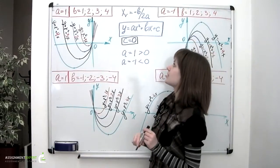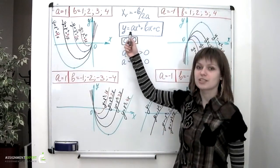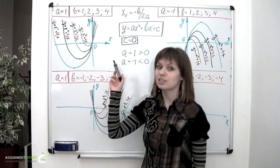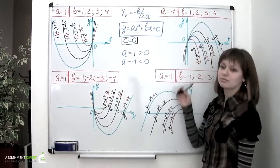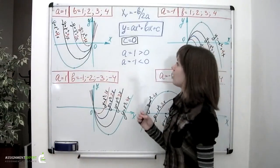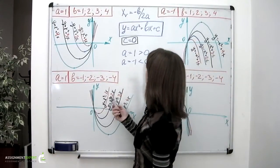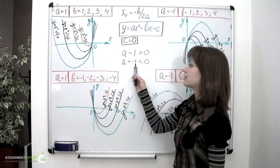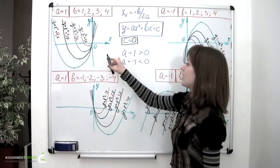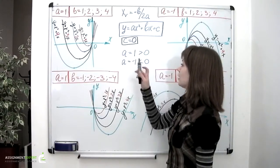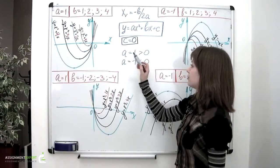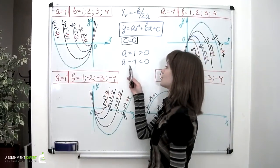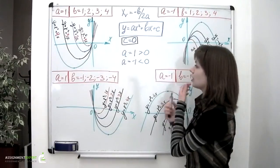We also remember that if a coefficient is a positive number, the branches of the parabola open up. And if it's a negative number, they open down. So to simplify our consideration, let us set a to the values of positive and negative 1. So a being equal to positive 1 stands for the case of all the positive numbers, positive a's. And a being equal to negative 1 stands for the opposite case.